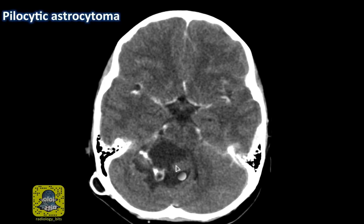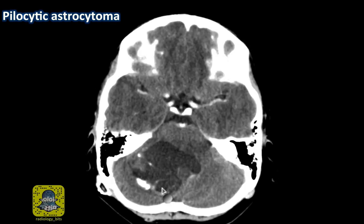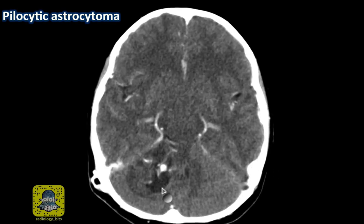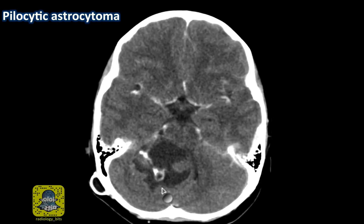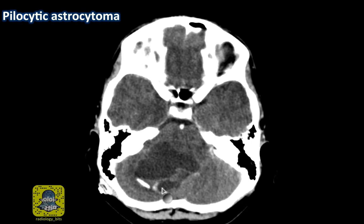The commonest location of a pilocytic astrocytoma in a pediatric age group is in the posterior fossa. The first question is: what is the second most common location of pilocytic astrocytomas? The second question is: which syndrome is pilocytic astrocytoma classically associated with?